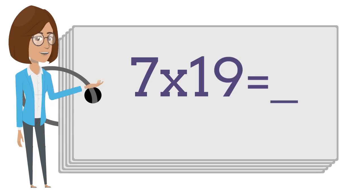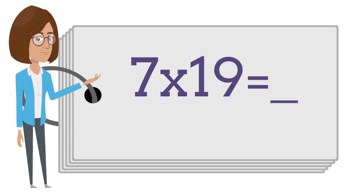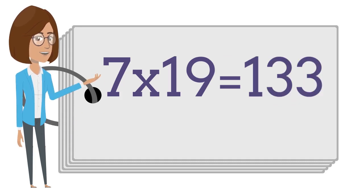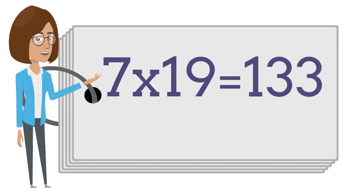7 times 19 is — say the answer out loud. 7 times 19 is 133.